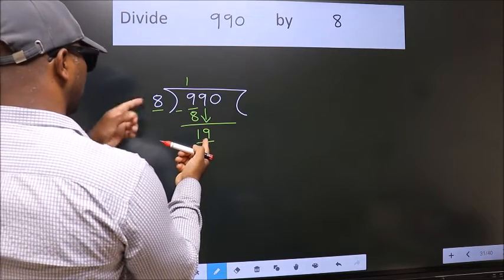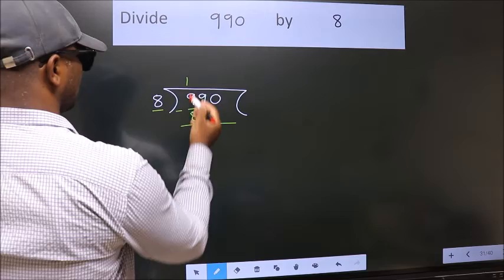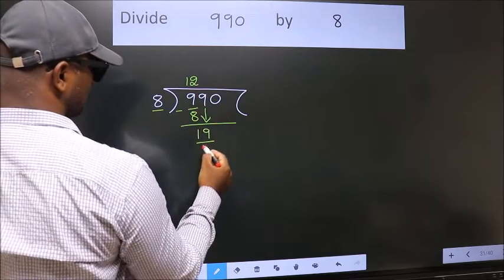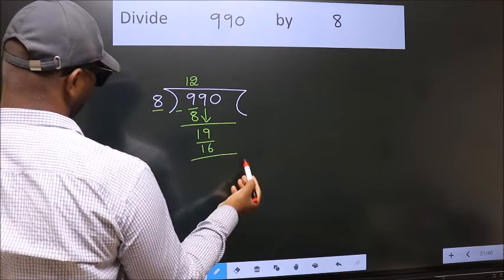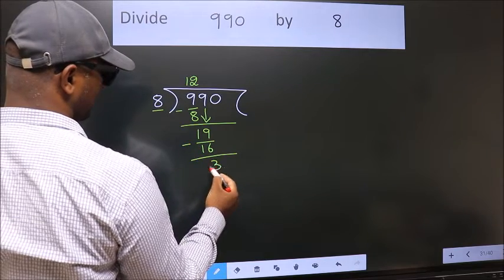A number close to 19 in 8 table is 8, 2s, 16. Now, we subtract. We get 3.